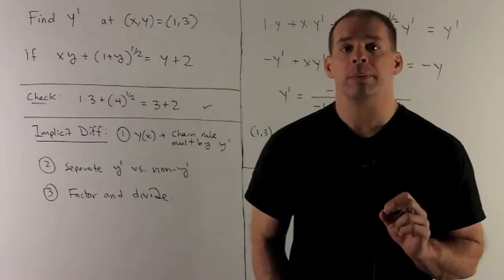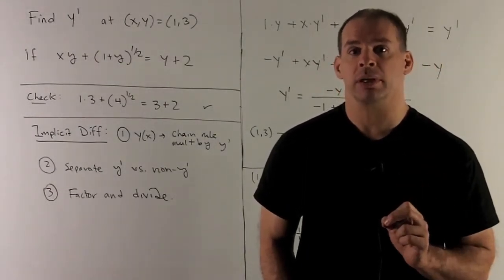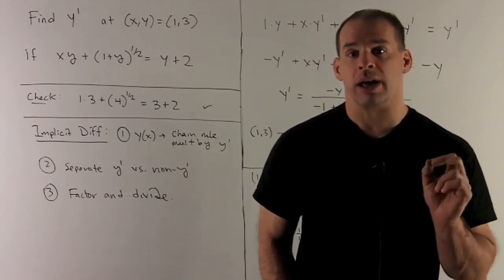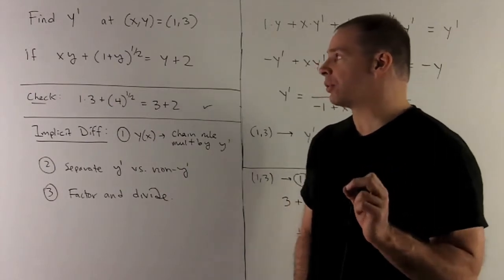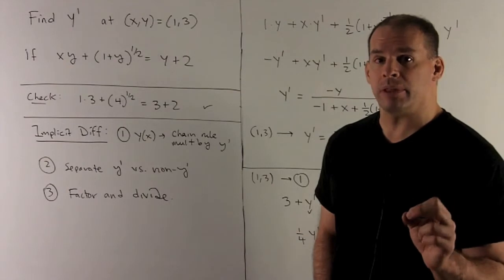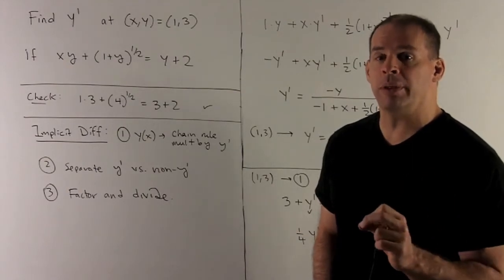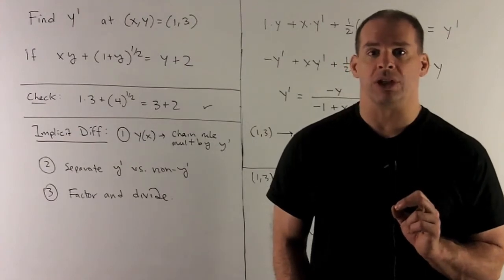First thing we want to do, check that our point 1 comma 3 satisfies the equation. So we put 1 and 3 in for x and y. We have 1 times 3 plus 4 to the 1 half, that together gives me a 5, and then on the other side we have 3 plus 2, that gives me 5, so we definitely satisfy the equation.